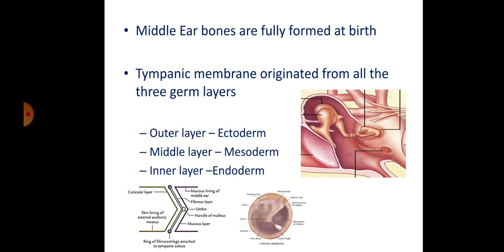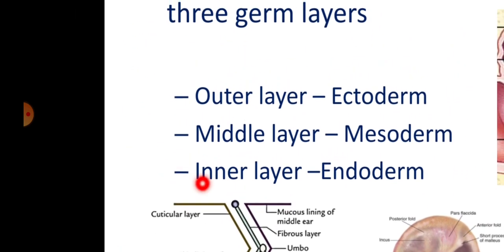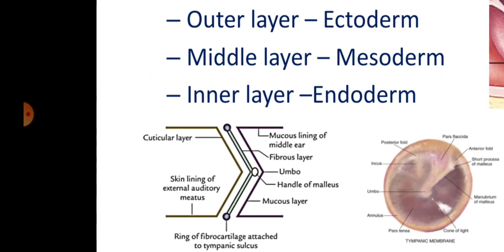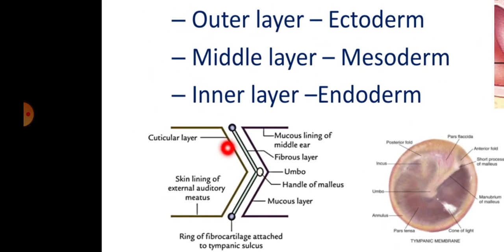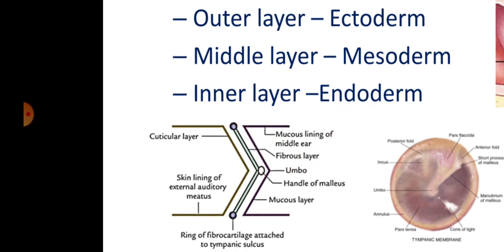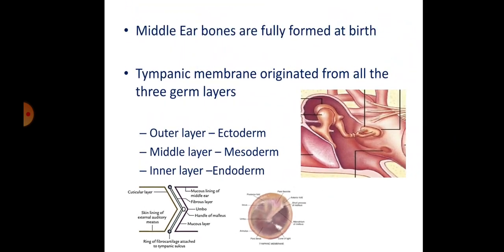Looking at the picture, you can see the tympanic membrane has an outer layer, a middle layer, and an inner layer. The outer layer originates from the ectoderm, the middle layer originates from the mesoderm, and the inner layer originates from the endoderm. This means the tympanic membrane originates from all three germ layers.